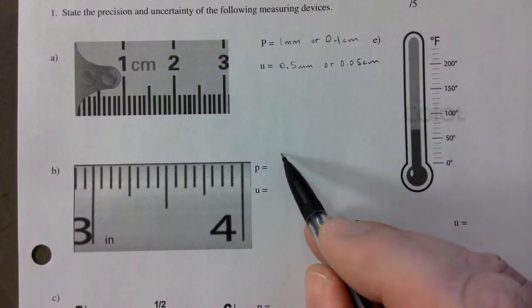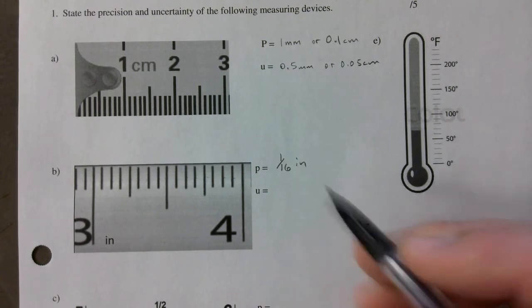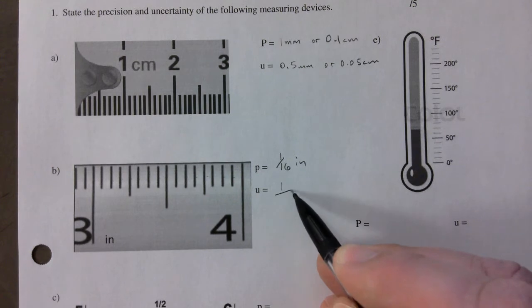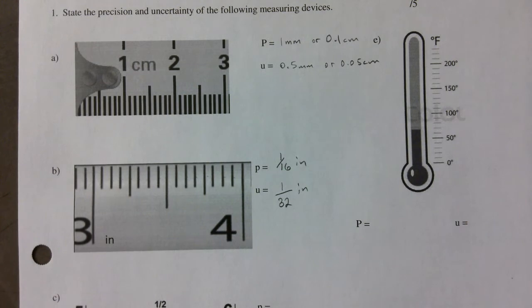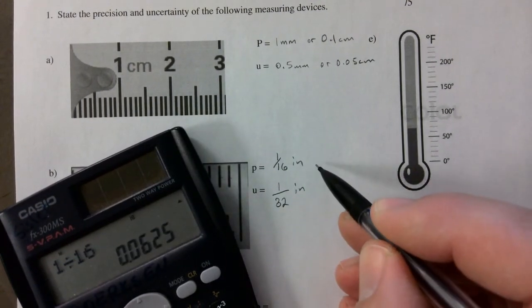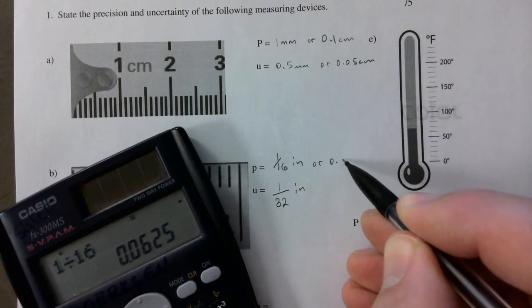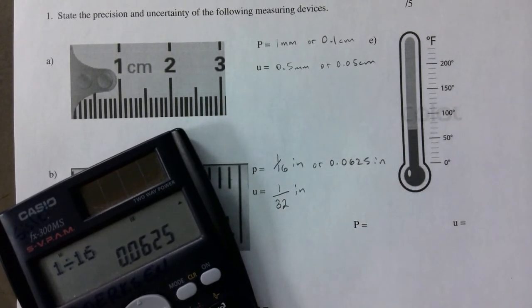This one is precise to the nearest one sixteenth of an inch, which means that the uncertainty is one thirty-second of an inch. If you stated this as a decimal, that would be your precision there.